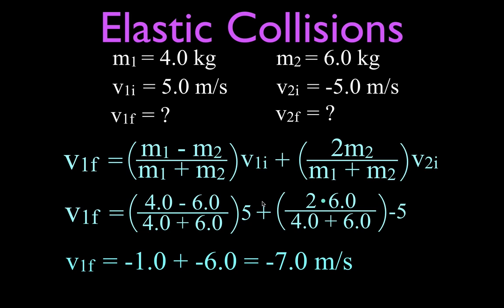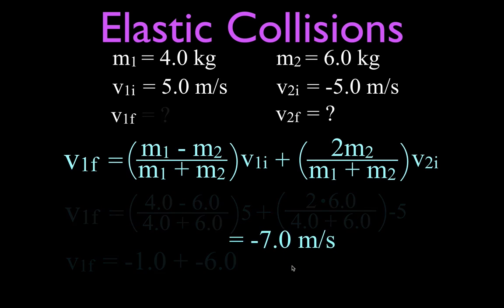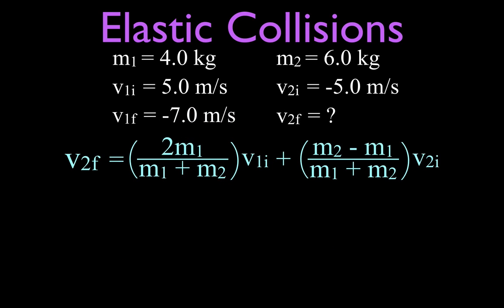Minus 2 times 5 divided by 10 gives minus 1. On the other side, we also get a negative term because we have minus 5 as the initial velocity of mass two. Adding those two negative numbers together, we find that mass number one is now moving in the negative direction — it was moving in the positive direction. It bounces off, as you'd expect, with a velocity of minus 7 meters per second, which is to the left.